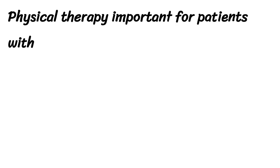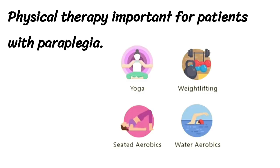Complications of paraplegia include pressure sores, thrombosis, depression, loss of muscle tone, pain, impotence, and bladder or bowel incontinence. Physical therapy is important for patients with paraplegia, including activities like yoga, weight lifting, seated aerobics, and water aerobics.